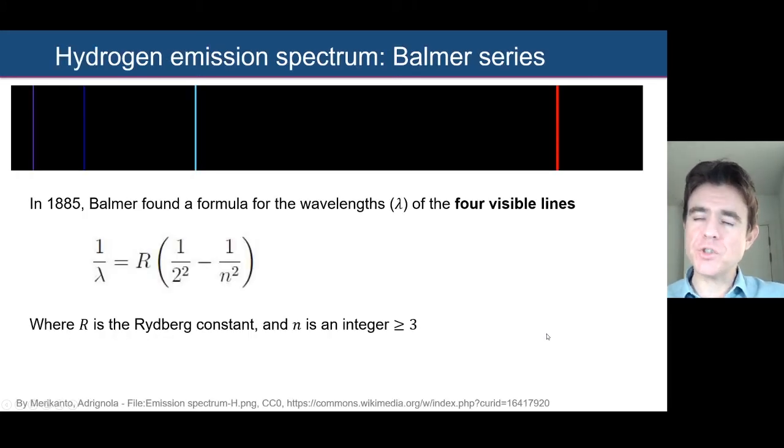Okay, so focusing again just on hydrogen, in 1885, Balmer found a formula that could nicely describe the particular wavelengths that we find in this visible part of the hydrogen light spectrum. In other words, these four particular visible wavelengths that are given off. It's given by this very simple formula here, where the reciprocal of the emitted wavelength is given by this constant. We'll see in a moment that constant is called the Rydberg constant. And it's multiplied by this difference of squared fractions. Basically, n here is an integer greater than or equal to 3.